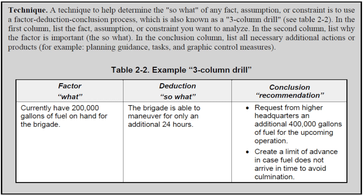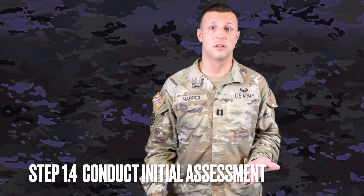Here's an example of the three-column drill. Factor: currently we have 200,000 gallons of fuel on hand for the brigade. Deduction (the 'so what'): the brigade can only maneuver for 24 more hours. Conclusion or recommendation: request from division an additional 400,000 gallons of fuel, and create a limit of advance to avoid culmination.